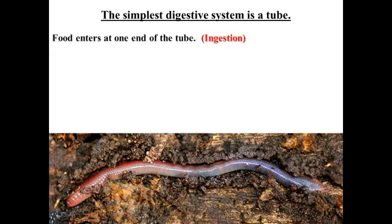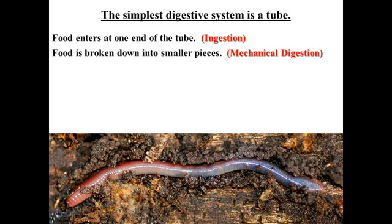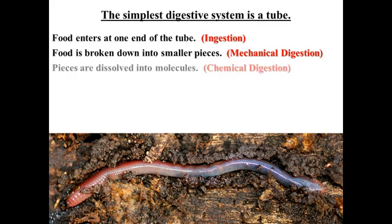If you think about our digestive system, it's very much the same way. We have one end of the tube that we call a mouth, and that is where food comes in. That food gets chopped up, smashed up, and mixed with a bunch of stuff. That process we call ingestion, where you ingest your food. The next process is that food is broken down into smaller pieces, and we call that mechanical digestion, where we're physically chopping up the food item — whether it's a cheeseburger, an apple, or in the case of the earthworm, just some soil.